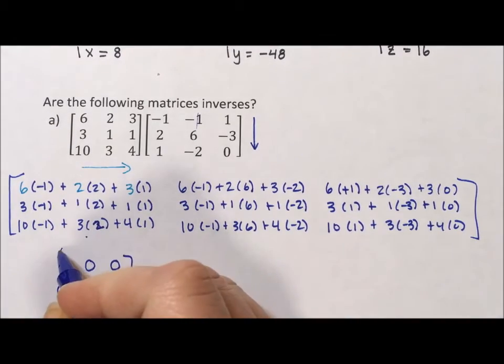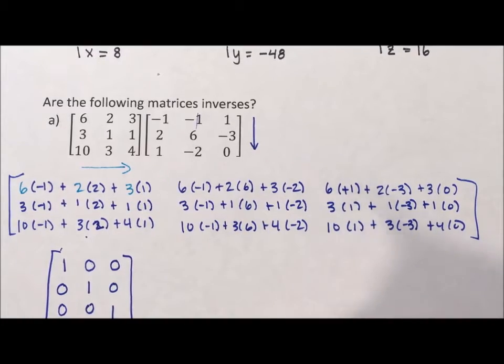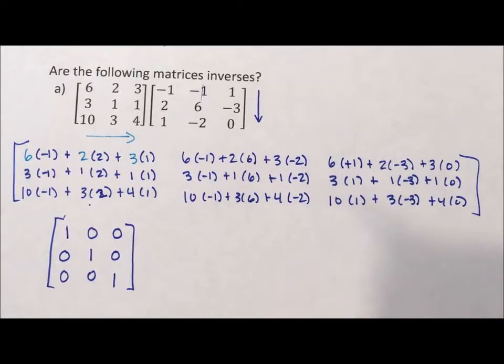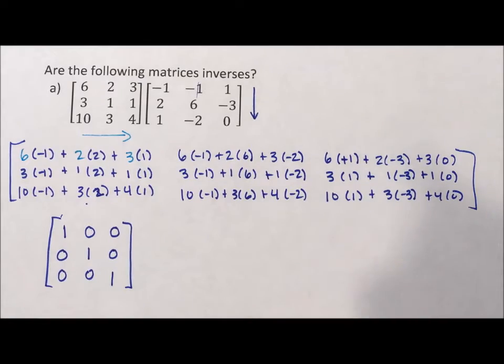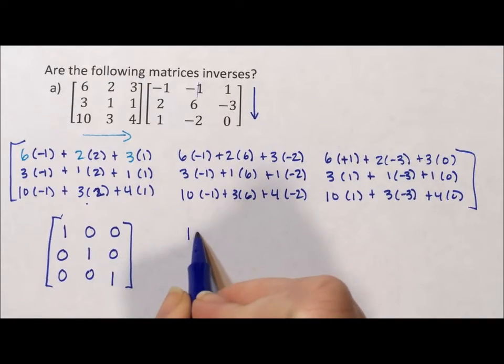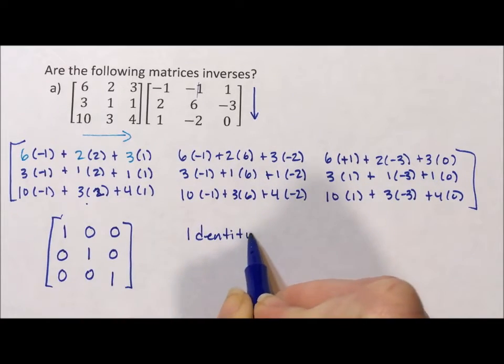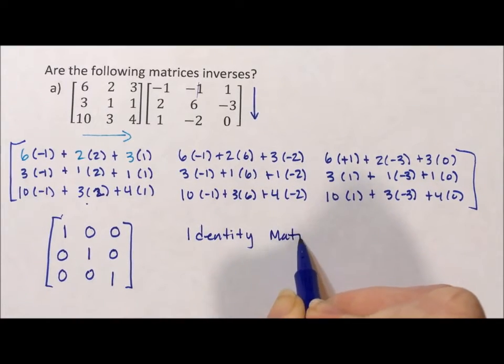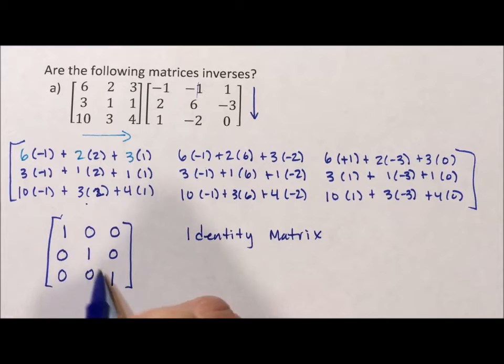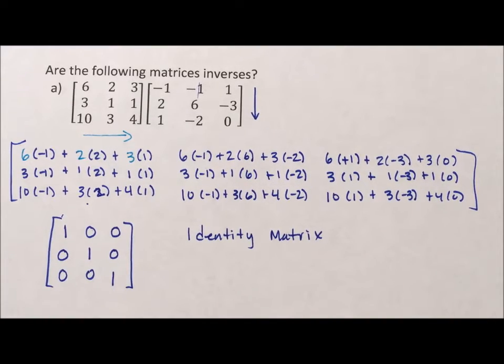Here we have what a 1 is for a matrix. So in matrices, our 1 is the identity matrix. And an identity matrix is a matrix that has 1s down the main diagonal and 0s everywhere else.